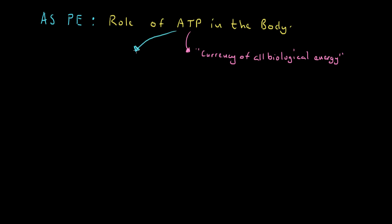The only source of energy for movement is ATP. Of course we also use other energy stores and sources to provide us with ATP, but the only source of energy for movement is ATP. With that understood, we need a rudimentary understanding of ATP — what it is, what it looks like, how it breaks down, and how we might rebuild it so that we can generate or burn more energy for movement.